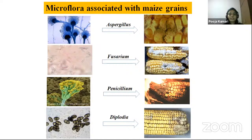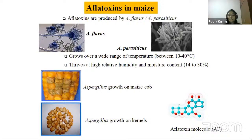Aspergillus flavus requires temperatures of 10–40°C and relative humidity of 14–30% for better growth and aflatoxin development. Here shown is the growth of Aspergillus on maize cob and kernels.